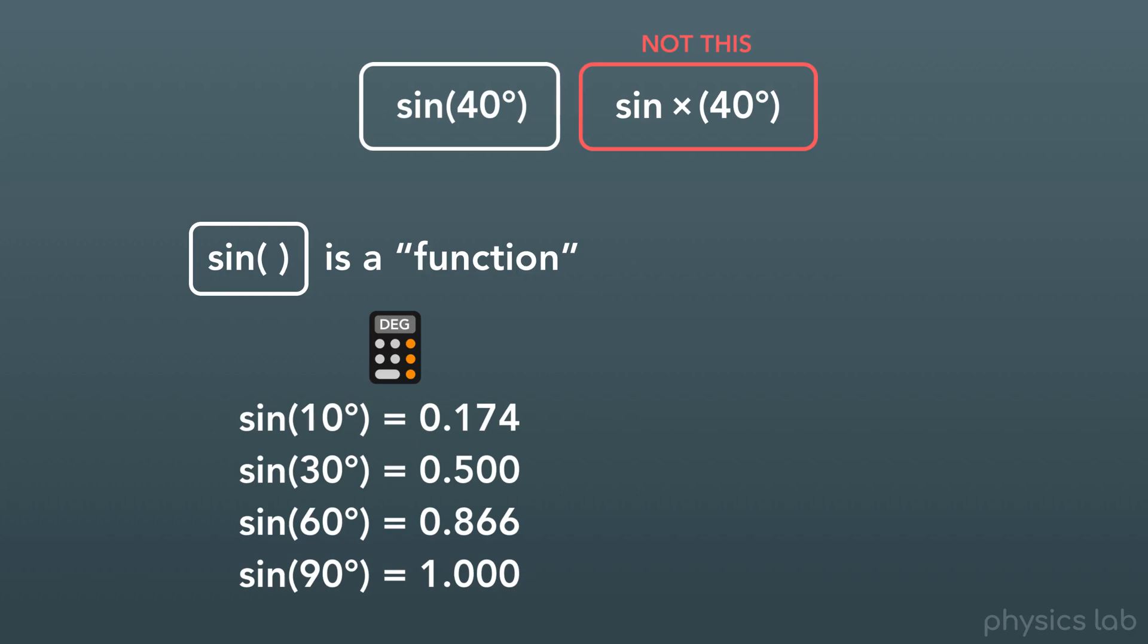If you find that your calculator isn't giving you these numbers here, it might be because the calculator is using units of radians instead of degrees. Keep in mind that if you're working with degrees, like we are here, then make sure your calculator is set to degrees.